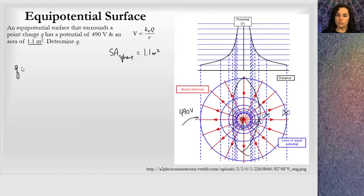Well, if I solve for Q in the equation, I'll move R over to the other side and get KE in the denominator. So I get V times R divided by KE. I know the voltage. I know the constant. I need to solve for R.